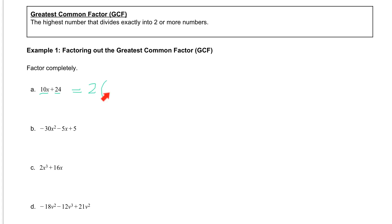To figure out what goes inside, we're dividing each term by the number we've taken out. So 10x divided by 2 — 10 divided by 2 is 5 — gives us 5x. And 24 divided by 2 is 12. So plus 12. And that's factored completely.